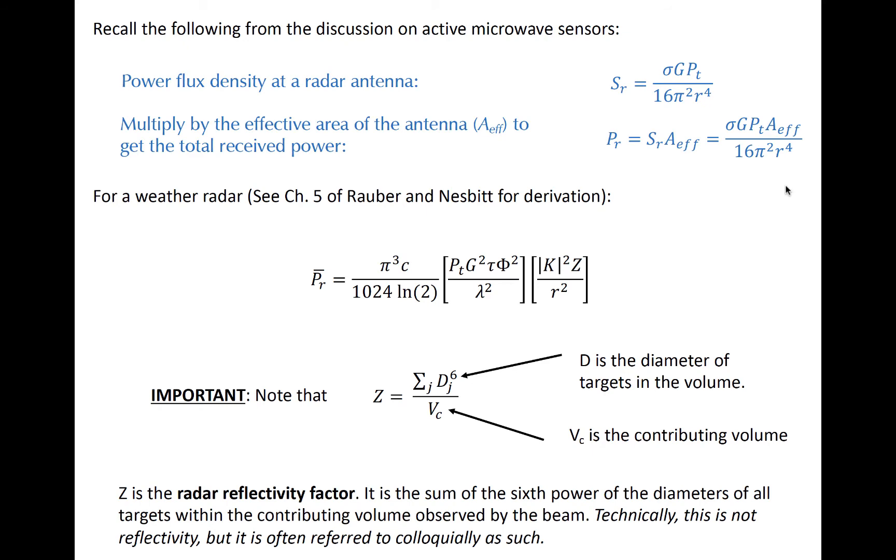The average power returned to an antenna after it transmits a signal is dependent upon several factors: the power transmitted, the antenna gain, the pulse duration, the beam width, the wavelength, the dielectric constants of the targets, the radar reflectivity factor, and the range.